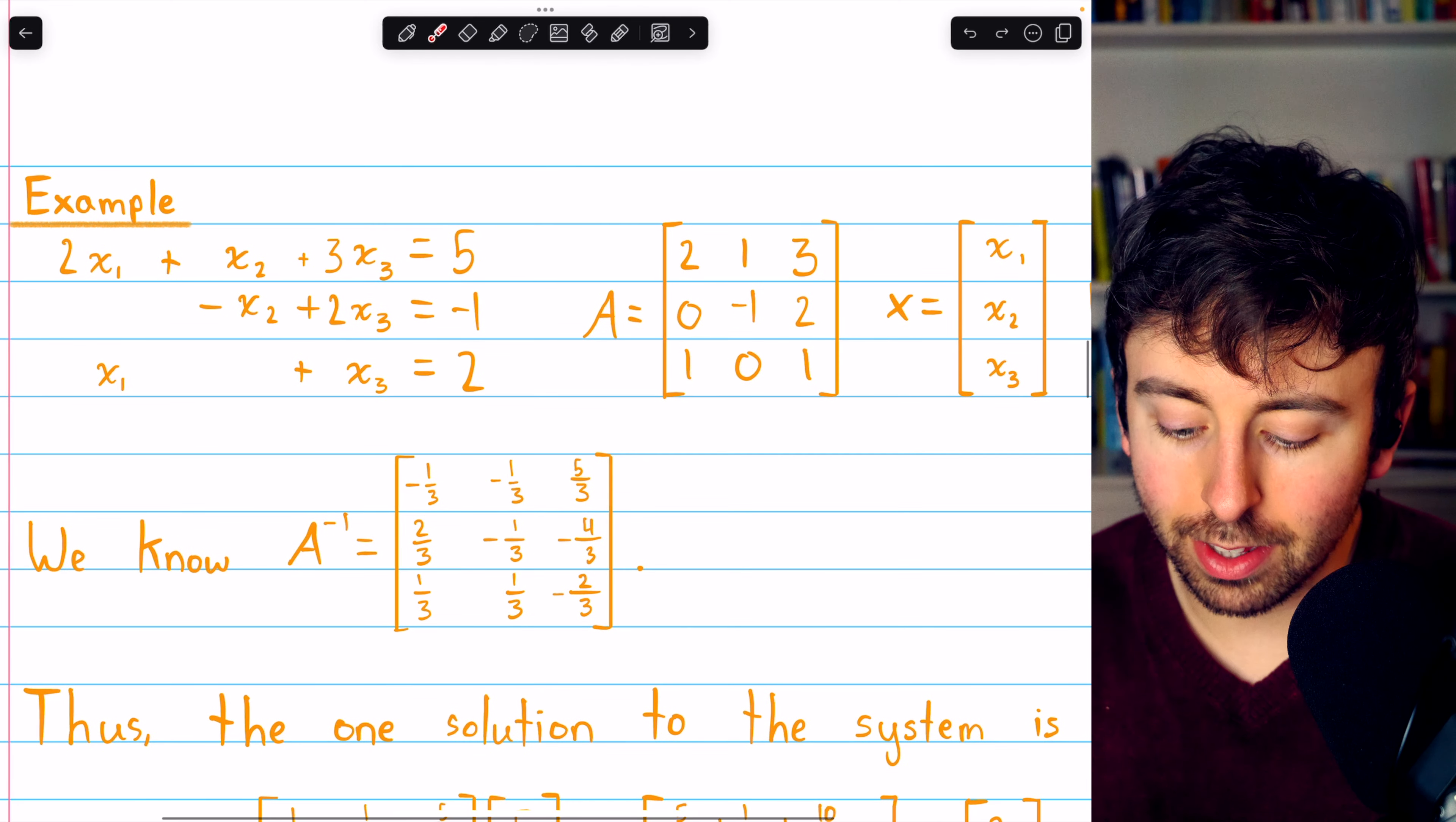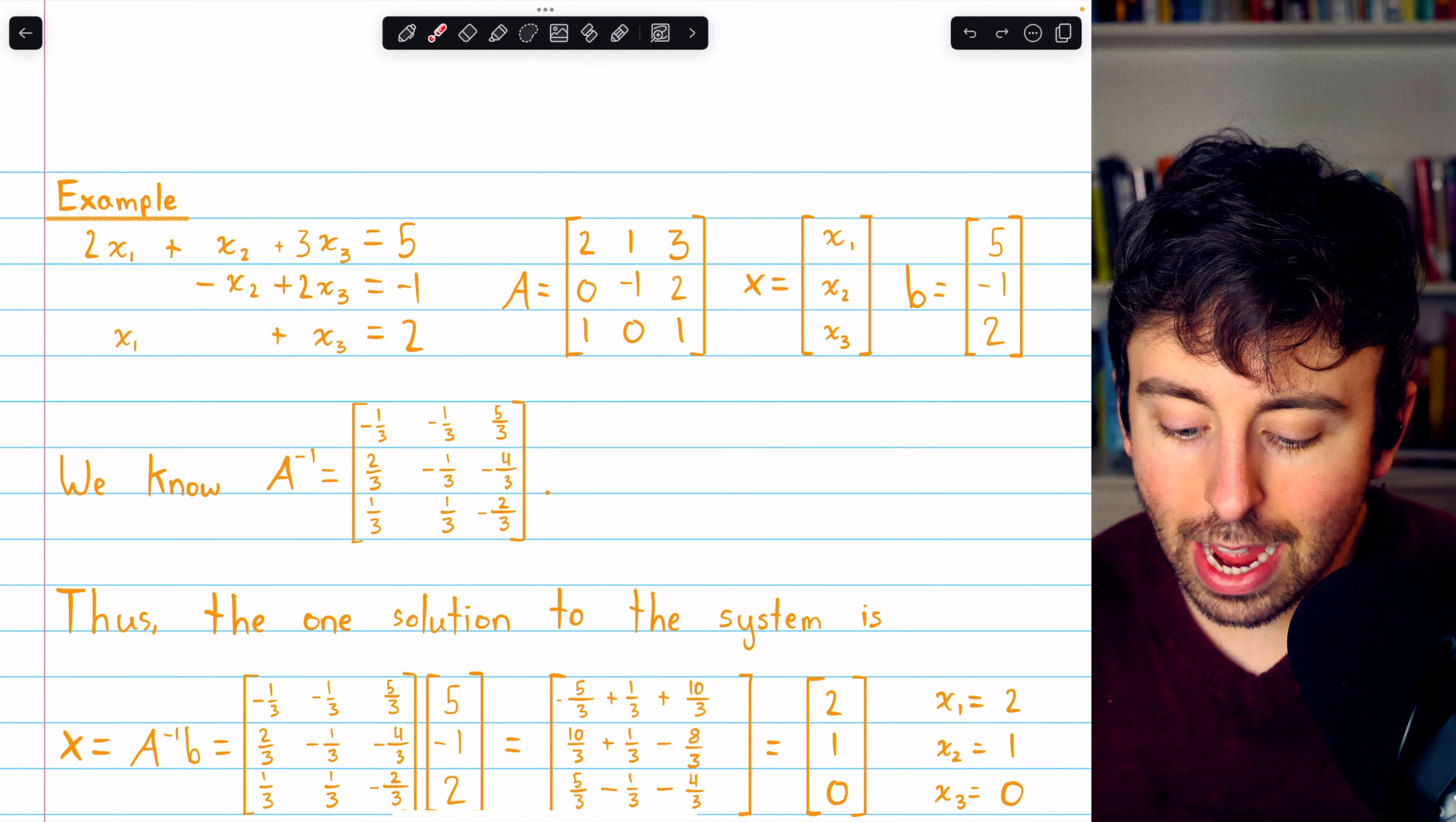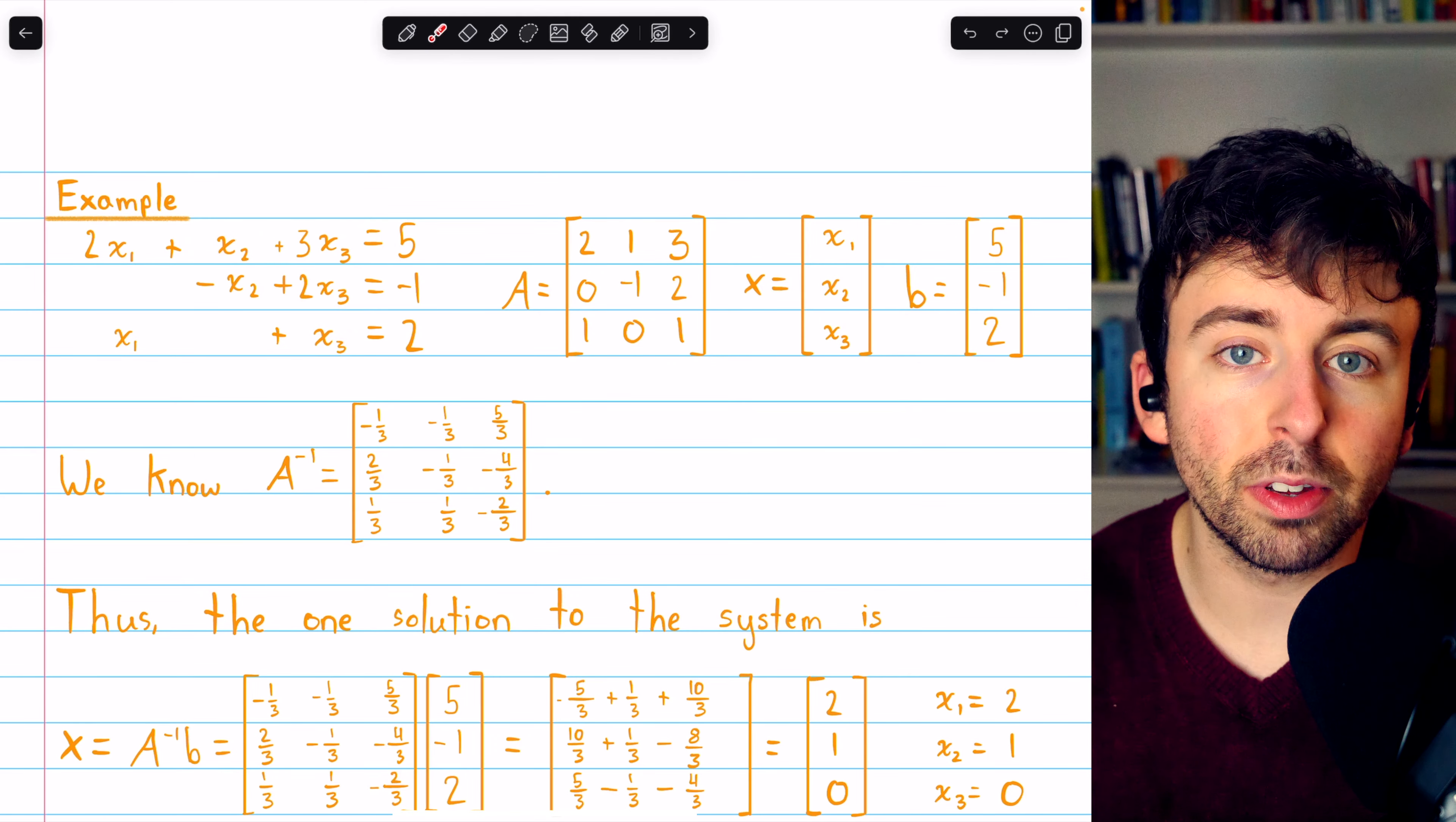We begin by writing the coefficient matrix, which is here. The constant column vector, B, is 5, negative 1, 2. And now we can solve this system of linear equations as long as we can find A inverse and then do some matrix multiplication.